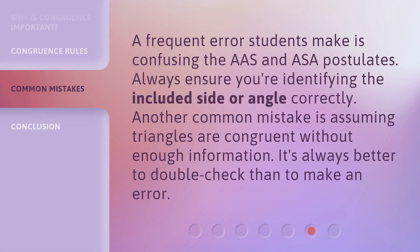A frequent error students make is confusing the AAS and ASA postulates. Always ensure you're identifying the included side or angle correctly. Another common mistake is assuming triangles are congruent without enough information. It's always better to double-check than to make an error.